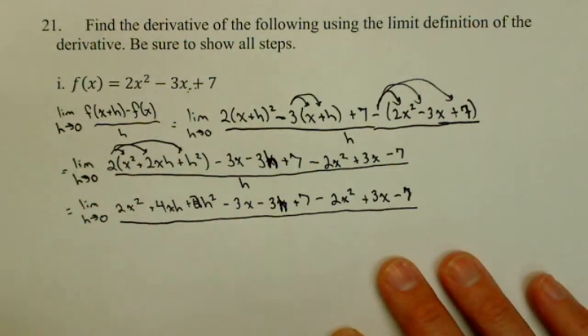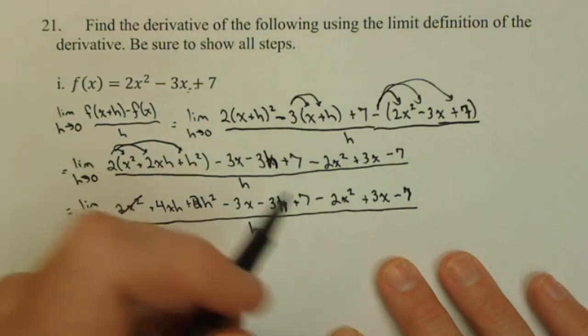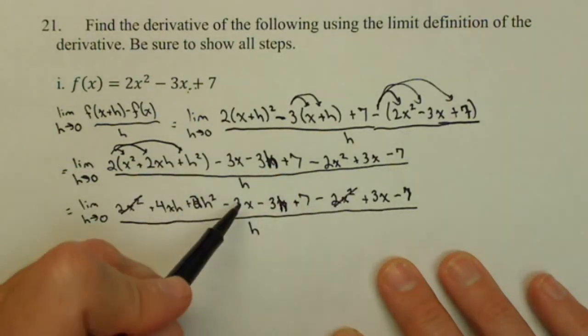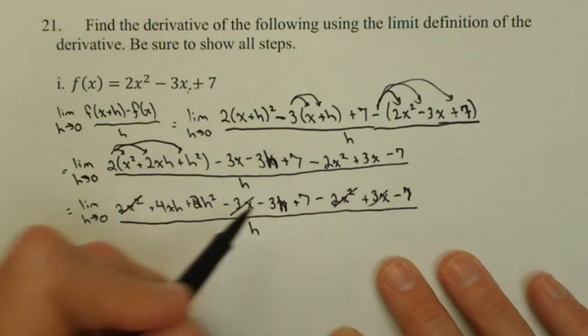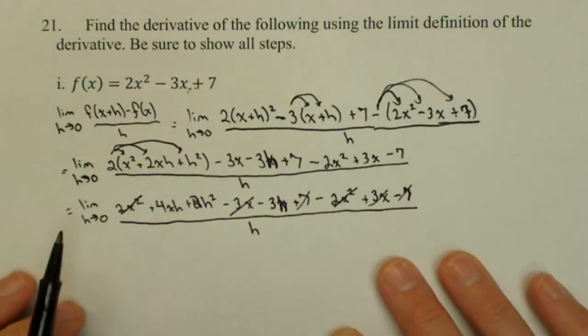Here's where things are going to start to work out rather nicely for us. 2x squareds are going to cancel, a negative 3x and a positive 3x will cancel, a positive 7 and a negative 7 will cancel.